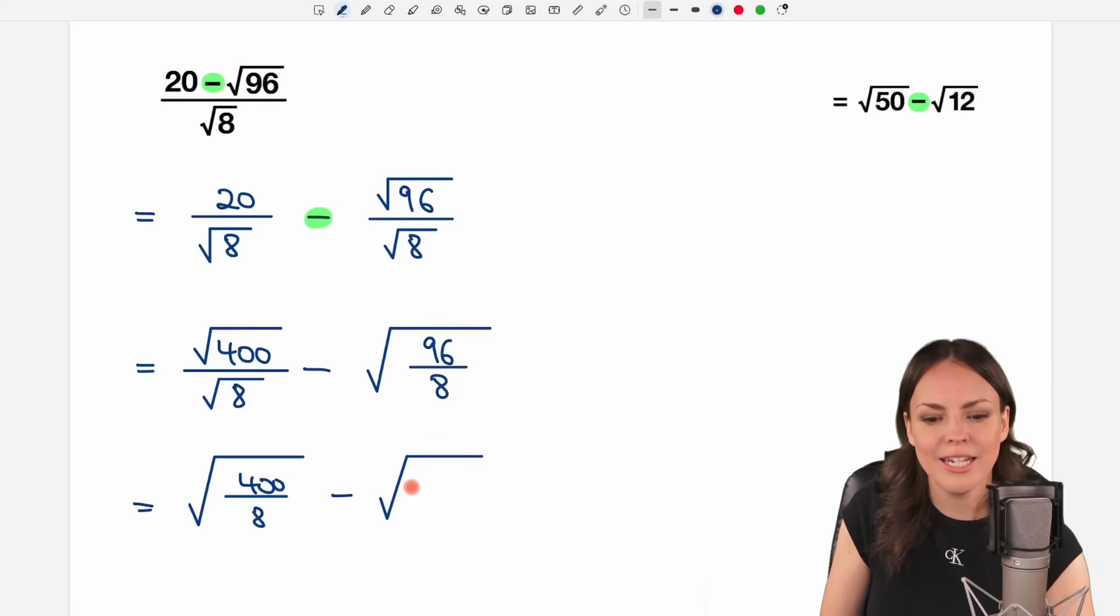So 96 over 8 equals 12, which is great if we compare it. And 400 over 8, please let it be 50. But yeah, it is. So if we calculate it, we get 50 here, and we found our expression.